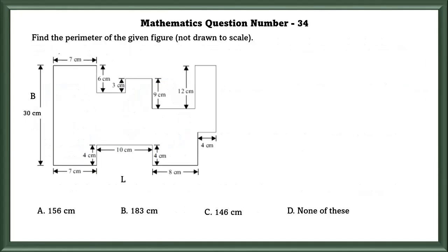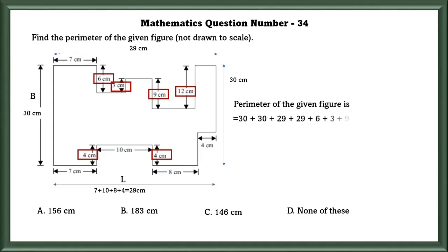Mathematics question number 34. Find the perimeter of the given figure, not drawn to scale. We know opposite sides are equal in a rectangle. Breadth is 30 cm, so the opposite side is also 30 cm. Length if we calculate is 29 cm. So the remaining parts that we can add to find the perimeter are 6 cm, 3 cm, 9 cm, 12 cm, 4 cm, and 4 cm. So the perimeter of the given figure equals 156 cm.